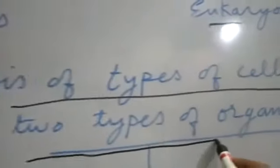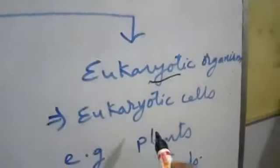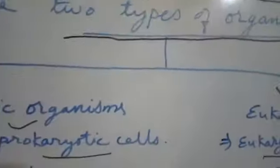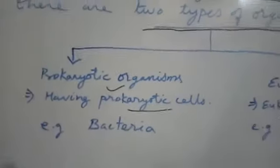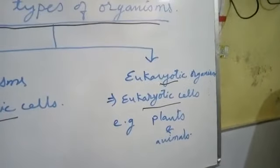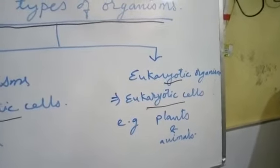There are two types of organisms: first prokaryotic organisms and second eukaryotic organisms. Prokaryotic organisms have prokaryotic cells, and eukaryotic organisms have eukaryotic cells. Prokaryotic organisms are bacteria, because bacteria have prokaryotic cells. Eukaryotic organisms are plants and animals, so plants and animals have eukaryotic cells.